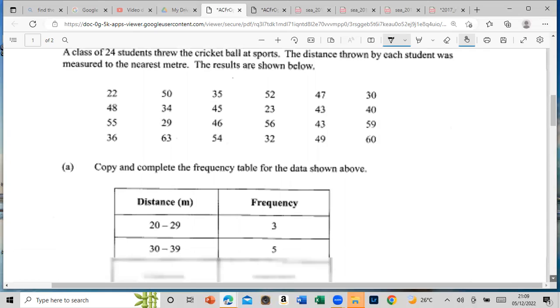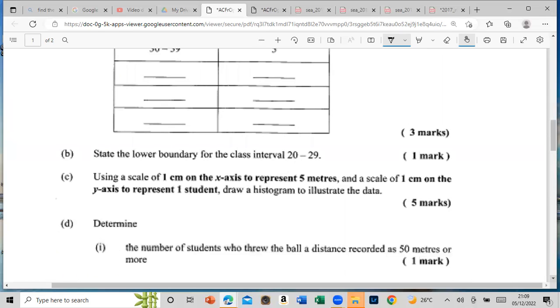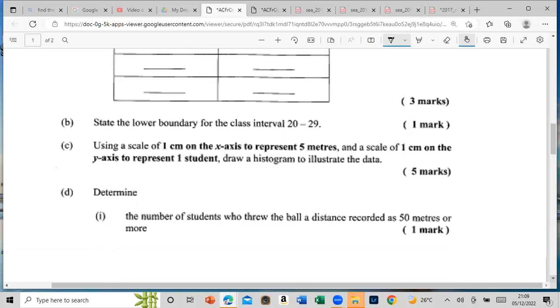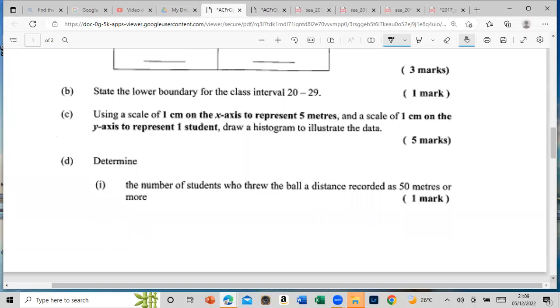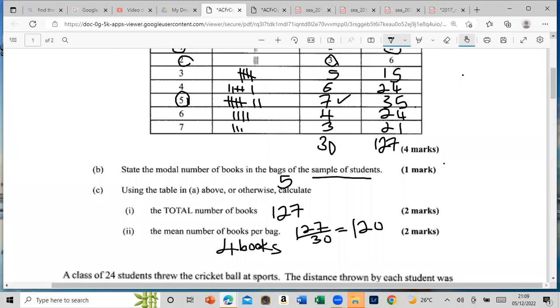These are all possible questions. It says state the lower boundary for the class interval 20-29, using the scale of 1 to 20 centimeter on the x-axis to represent 5 meters, and draw the histogram, and then determine the number of students who threw the ball at such a distance. Please ensure that you are subscribed and like this video. Thanks for watching guys, I'm out, see you.